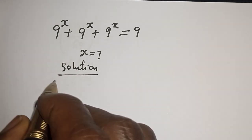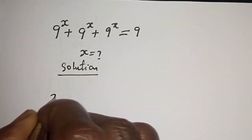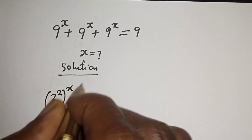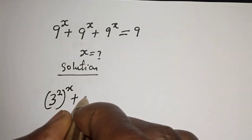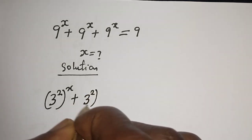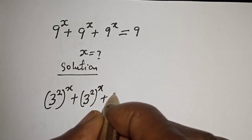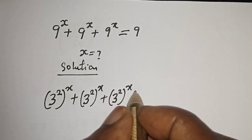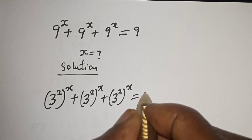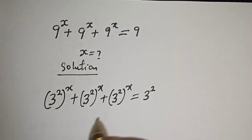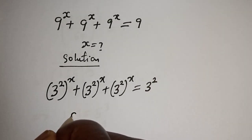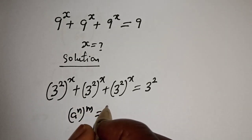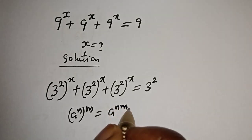Solution: 9 raised to power s — note that 9 can be written as 3 squared. So each term 9 raised to power s becomes 3 squared raised to power s. Take note of this rule: a raised to the power n, raised to the power m, is equal to a raised to the power n times m.